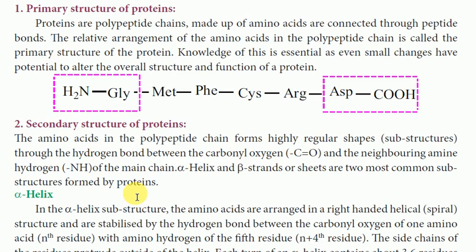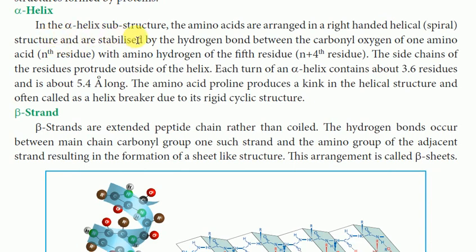Alpha helix and beta strand protein structures are formed through hydrogen bonding. The alpha helix substructure is arranged in a right-handed helical, that is a spiral structure. It is stabilized by hydrogen bonds between the carbonyl oxygen (C=O) of one amino acid residue and the amino hydrogen of the N+4th residue.